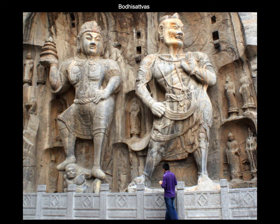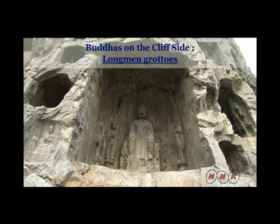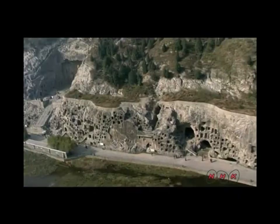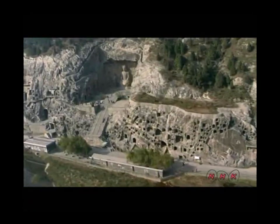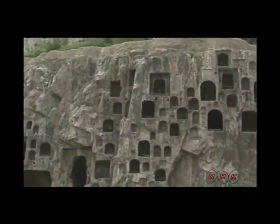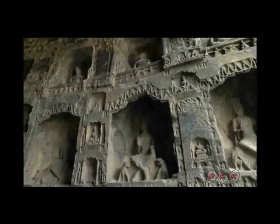Buddha is assisted by two bodhisattvas and two disciples. The bodhisattvas are enlightened beings who have put off entering paradise in order to help others attain enlightenment. There were approximately 110,000 Buddha stone statues located along the Longmen Caves. This is the Yi River, which runs through the suburbs of the ancient capital of Luoyang. The Longmen Grottoes are one of the three largest grotto sites in China. The large Buddha statue inside this cave was carved in the 7th century during the Tang dynasty. More than 100,000 Buddhist statues were carved here over a 400-year period, and the oldest cave dates back to the year 494, at the time of the Northern Wei dynasty.